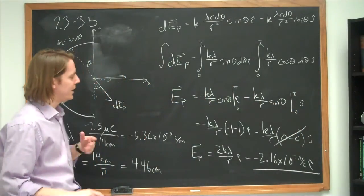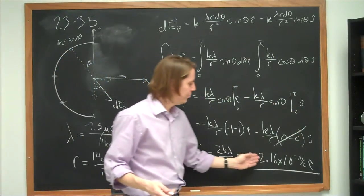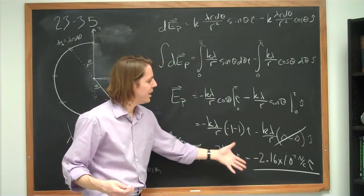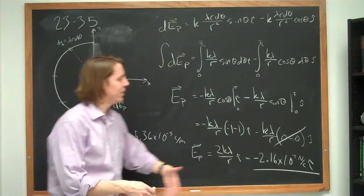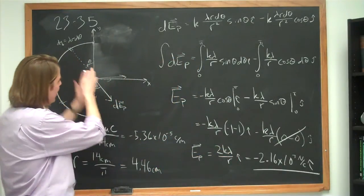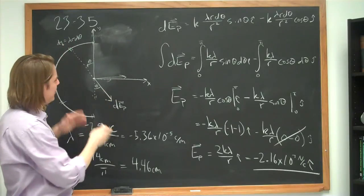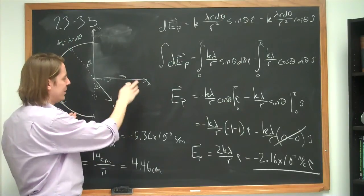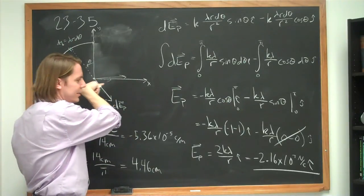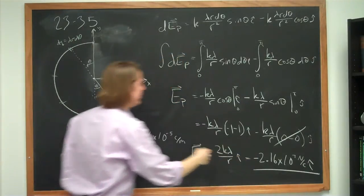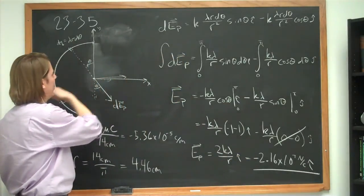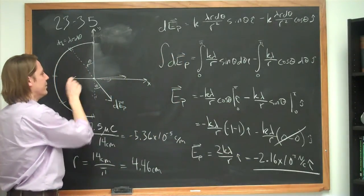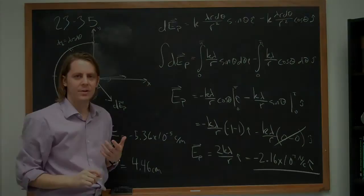The magnitude is 2.16×10⁷ Newton per Coulomb. For the direction: i-hat is the positive x direction, and the result is negative, so the field points to the left. The magnitude is 2.16×10⁷ N/C and the direction is toward the negative x direction — to the left.